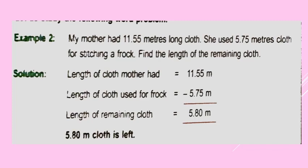Length of the cloth mother had equals 11.55 meter. From this, the cloth used for the frog is 5.75 meter, so we subtract: 11.55 minus 5.75. Do the subtraction and you will get the answer 5.80 meter.